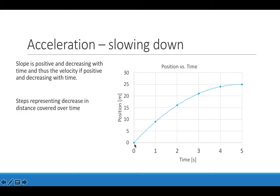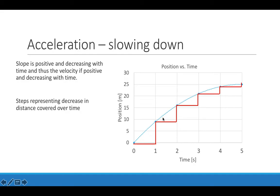Looking at the position versus time graph for a slowing object, the graph gets less and less steep over time, so the slope is decreasing over time. Putting in steps over one-second intervals and checking the rise over the run confirms the slope is decreasing. Since the slope of the position versus time graph represents velocity, a positive but decreasing slope means the velocity is decreasing over time.